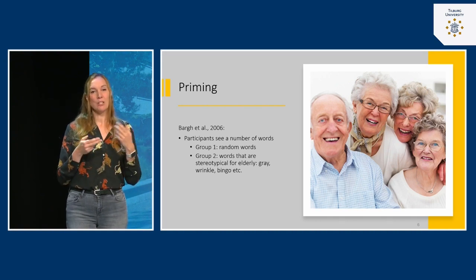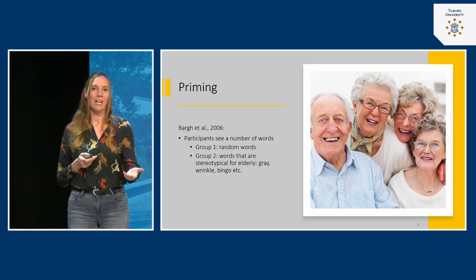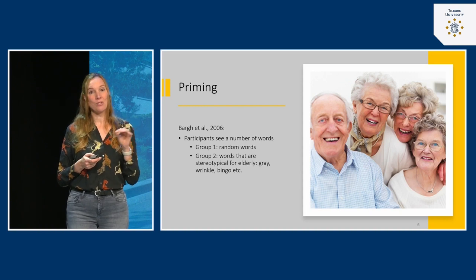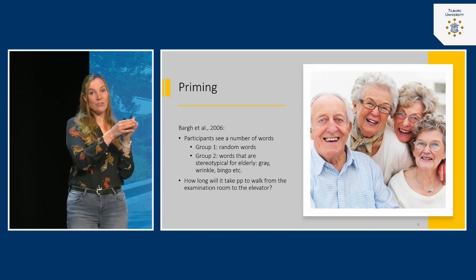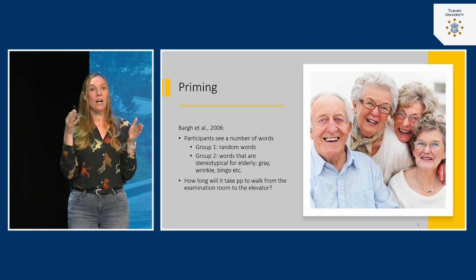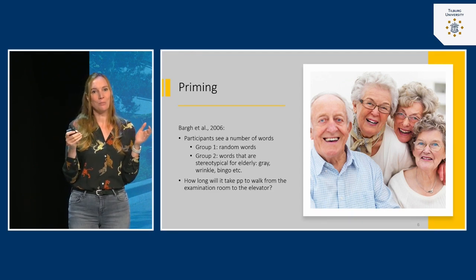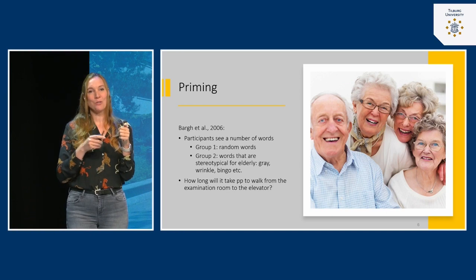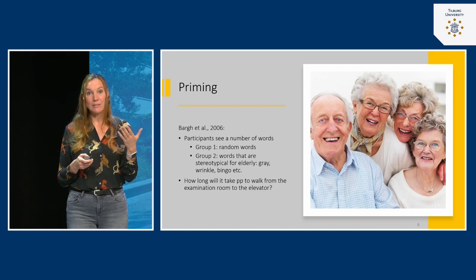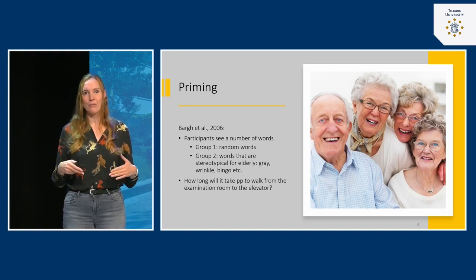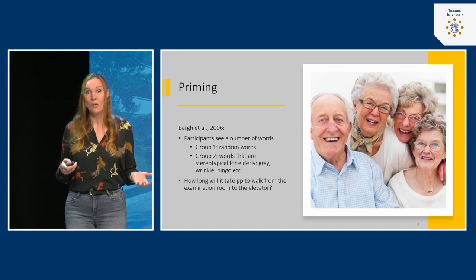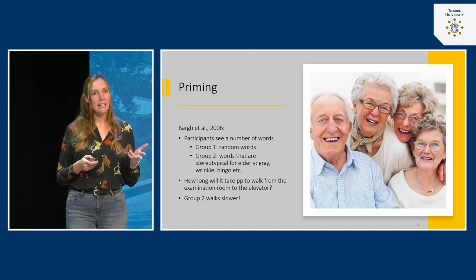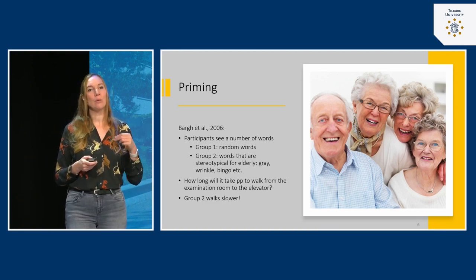After this priming manipulation, Bargh asked participants to go to another room. What he actually measured — with a stopwatch — was how long it took them to walk to the elevator they needed to reach that room. His idea was: if the concept of elderly is activated, maybe this unconsciously impacts behavior and people start walking slower. And indeed, he found that the group primed with the concept of elderly walked to the elevator more slowly.